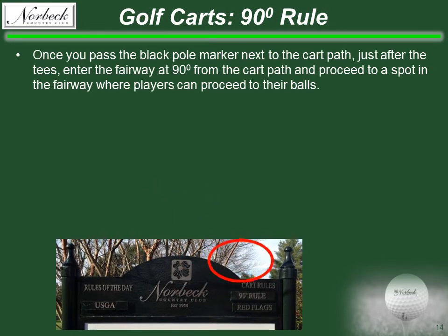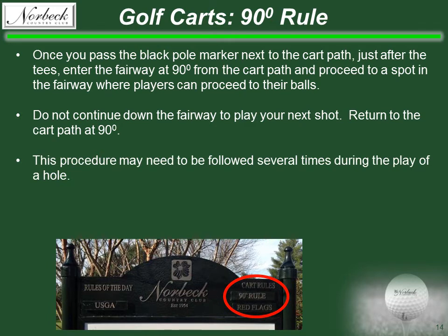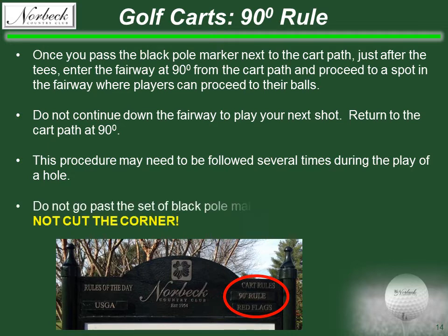The 90-degree rule: carts can leave the cart path after the black pole marker adjacent to the path just past the tee boxes. When leaving the path, do so at 90 degrees and head to a spot where both players can proceed to their balls. Do not continue down the fairway. Carts must return along the same route back to the cart path at 90 degrees. Depending upon the location of the group's balls, this procedure may need to be followed several times during the play of the hole. Do not go beyond the next set of black poles short of the green.